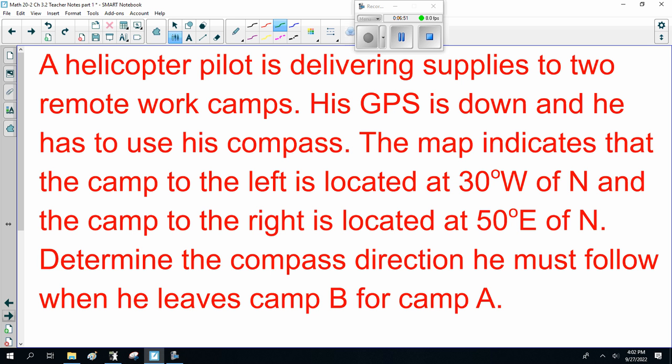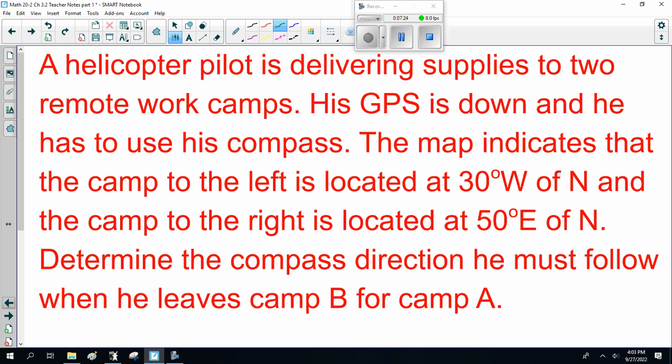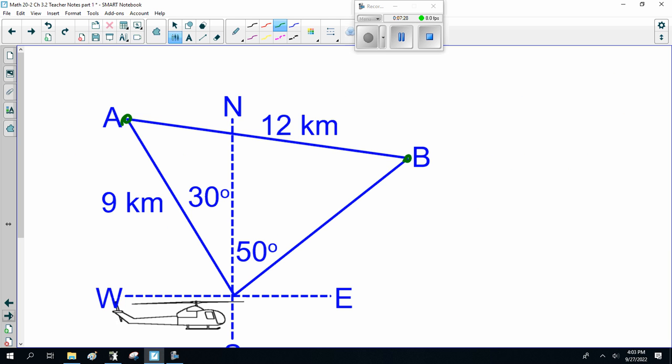Because, I'm going to throw this nasty question at you. A helicopter pilot is delivering supplies to two remote work camps. His GPS is down, and he has to use his compass. The map indicates that camp to the left is located 30 degrees west of north. The camp to the right is located 50 degrees east of north. To determine the compass direction, you must follow when he leaves camp B for camp A. Here you got the picture. So, he goes to camp A, and then he wants to fly to camp B. What's his direction? Now, he knows that 12 kilometers apart. What's the compass direction? So, where is he going? Well, north, east, south, west. We've got to figure out an angle.